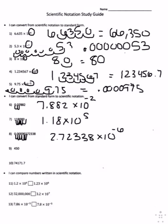Number nine, you move the decimal one, two times, and get 4.5 times 10 to the second.